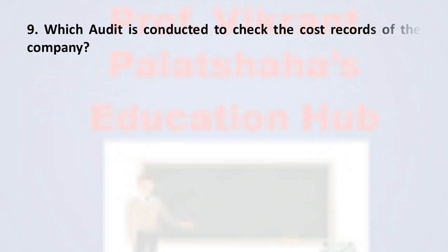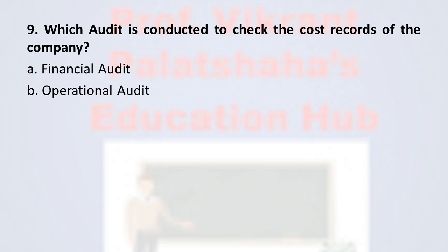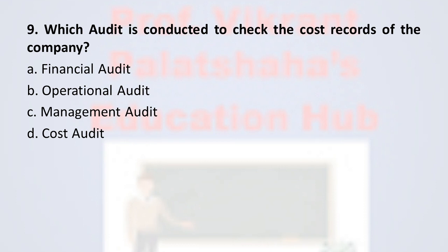Question number nine: which audit is conducted to check the cost records of the company? Option A financial audit, option B operational audit, option C management audit, and option D cost audit. The correct option is option D, cost audit.